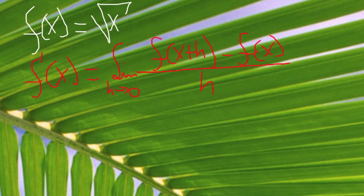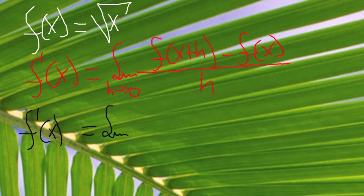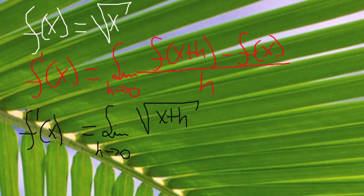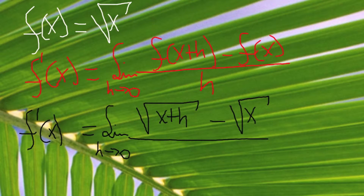Using this definition for our example, which is square root of x, we are going to have f prime of x equals limit as h reaches 0. The quantity f of x plus h is square root of x plus h, and f of x is just square root of x, everything divided by h.